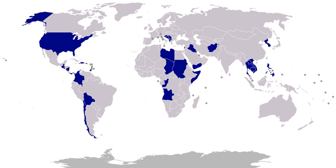1986, Libya, action in the Gulf of Sidra: on March 26, 1986, President Reagan reported that on March 24 and 25, U.S. forces, while engaged in freedom of navigation exercises around the Gulf of Sidra, had been attacked by Libyan missiles and the United States had responded with missiles. 1986, Libya, Operation El Dorado Canyon: on April 16, 1986, President Reagan reported that U.S. air and naval forces had conducted bombing strikes on terrorist facilities and military installations in the Libyan capital of Tripoli, claiming that Libyan leader Muammar Gaddafi was responsible for a bomb attack at a German disco that killed two U.S. soldiers. 1986, Bolivia: U.S. Army personnel and aircraft assisted Bolivia in anti-drug operations. 1987, Persian Gulf: USS Stark was struck on May 17 by two Exocet antiship missiles fired from a Dassault Mirage F-1 of the Iraqi Air Force during the Iran-Iraq War, killing 37 U.S. Navy sailors.